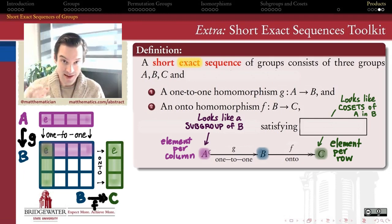But even when it's not actually the case, I still think of this relationship as being like the relationship of a subgroup of B and the cosets of that subgroup inside of B to the group B itself.